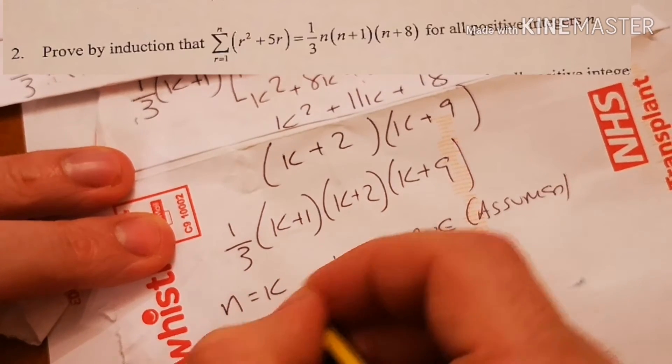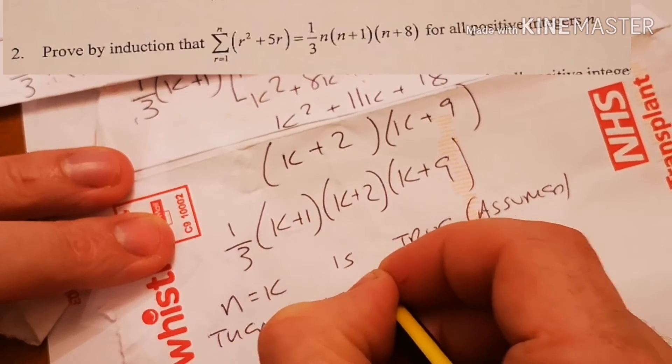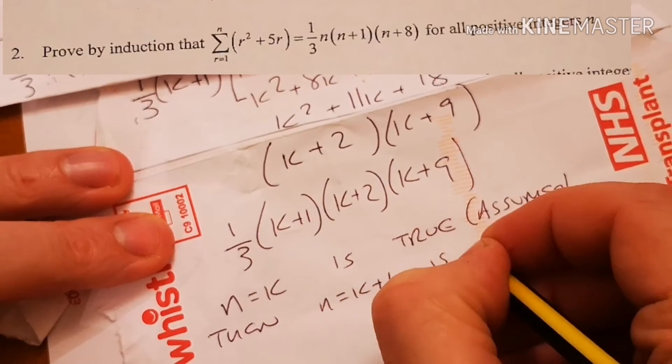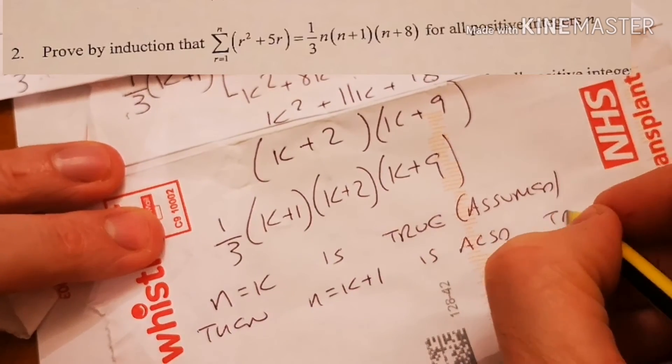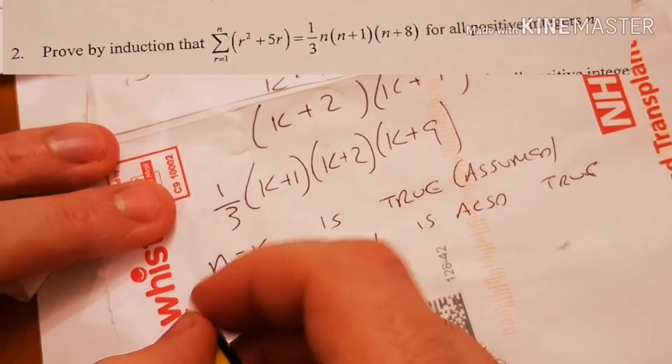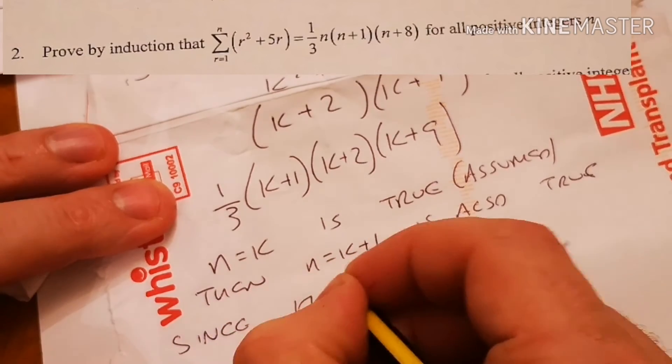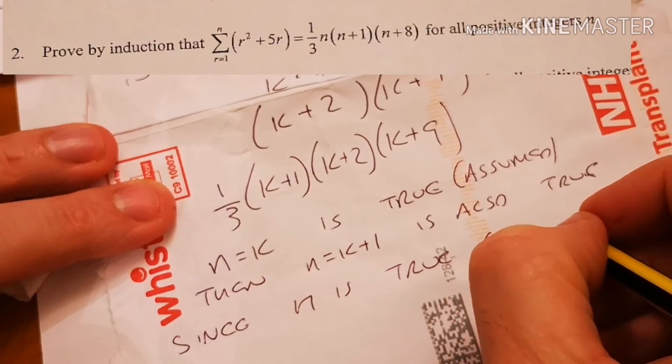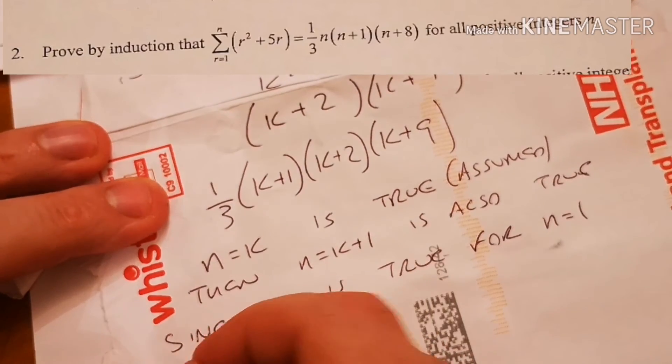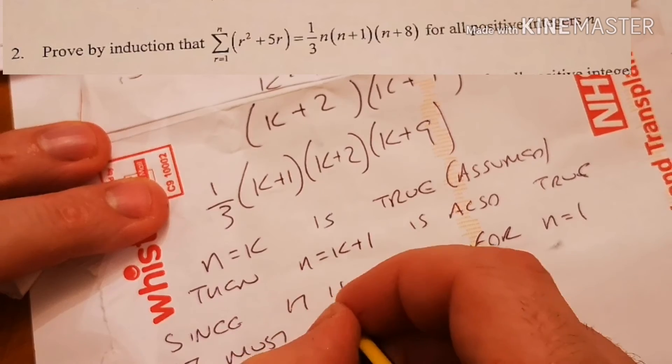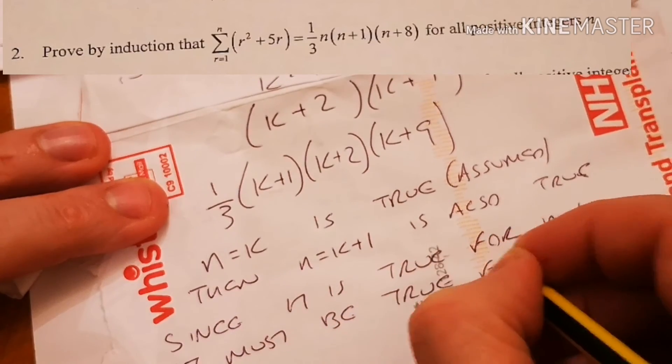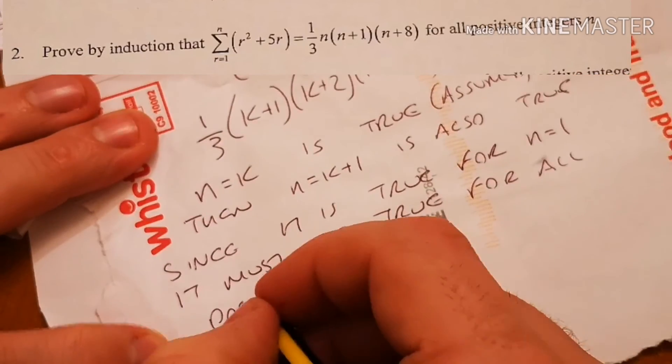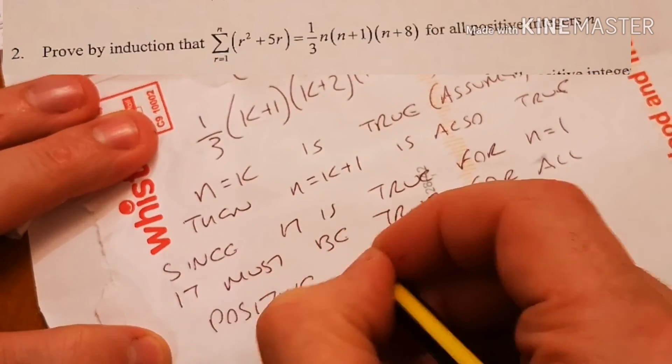If I'm writing it, then n equals k plus 1 is also true. And since it is true for n equals to 1, it must be true. It's true for all positive integers.